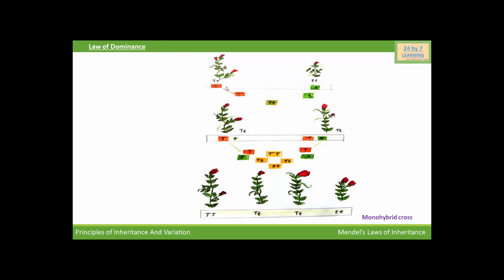This is a tall plant having both alleles for tallness, that is capital T, and this is the dwarf plant having both alleles small t for dwarfness. These are the pure tall and pure dwarf plants in parental generation. After crossing, you can see in F1 generation...